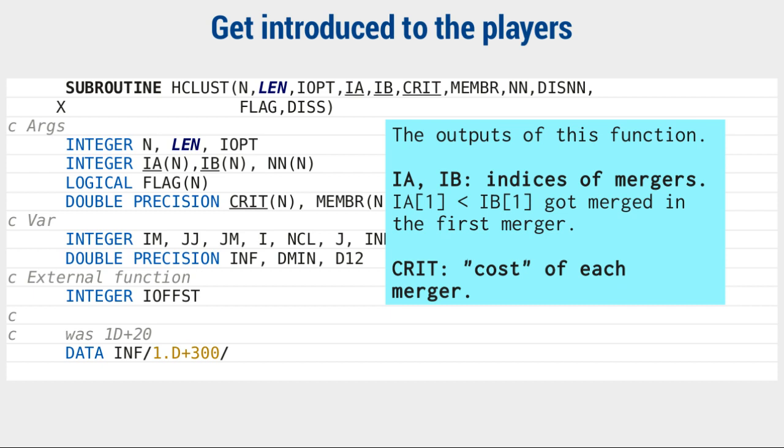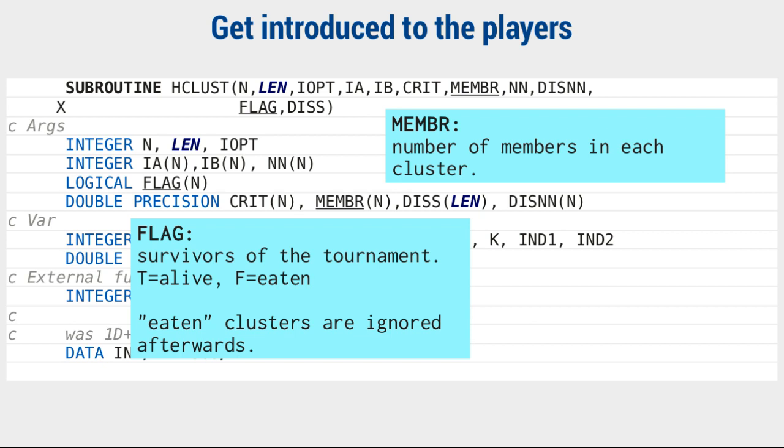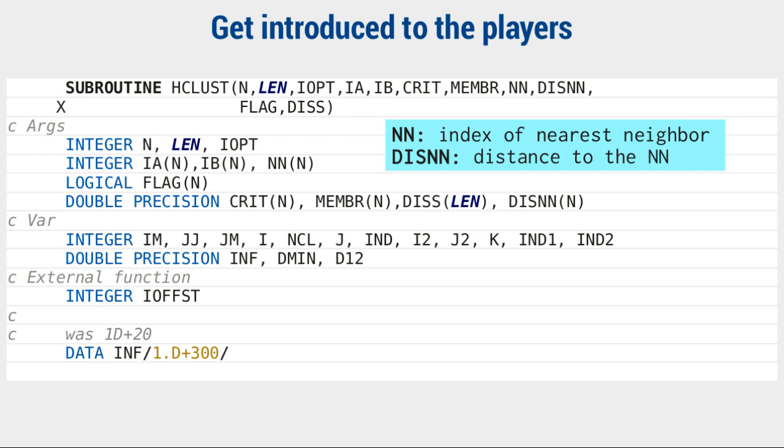Their sizes are declared to be n, but only the first n-1 rows will be used to record which two clusters are merged, and at what price. Member is the number of members, flag could be called alive, and nn or diss-nn hold the indices of nearest neighbor and the dissimilarities to them. And finally, the dissimilarity matrix itself.